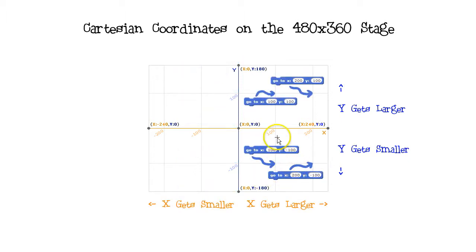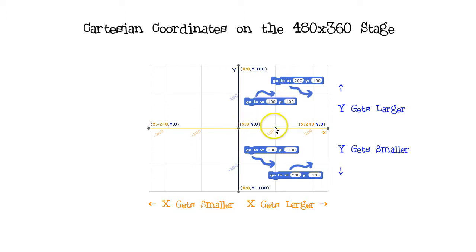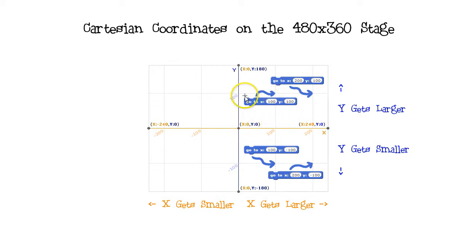Here are some locations on the right half of the stage. Positive x-values are on the right half. GoTo 200, 100. GoTo 100, 100.